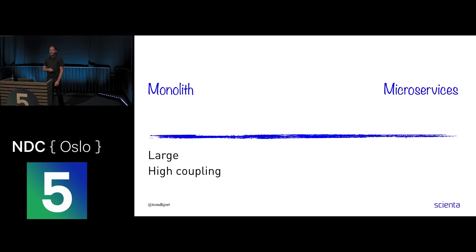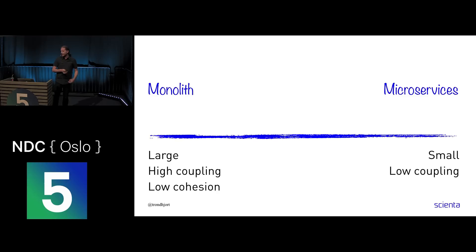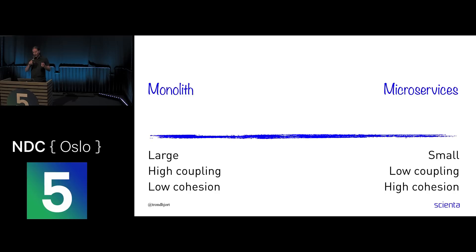Let's do the characteristics first. Large monoliths often have high coupling — the large stuff in the same place all coupled together — and low cohesion, meaning a lot of stuff together that doesn't necessarily logically live together, just put there by accident. On the other end, we want something small — micro — with low coupling between these things, ideally, and high cohesion. Each component should be drilled to do one thing and one thing well.